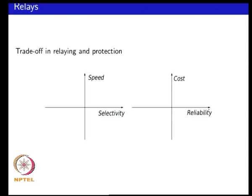When you want decisions at high speed you might be more prone to noise and making the wrong decision. So a trade-off might be that if your speed is very fast you might have poor selectivity, or if you are taking more time to make the right decision your speed is naturally less. Your ideal relay should be capable of operating at both high speed and high selectivity, but the trade-off within your algorithms would be between speed and selectivity.